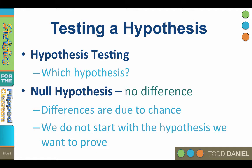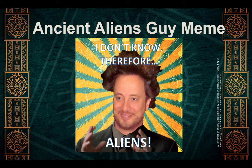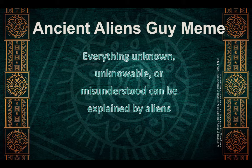Here is why we begin with the null hypothesis and not the hypothesis we would like to prove. It's Ancient Aliens Guy from the History Channel — an internet meme about a guy on a television show about aliens. No matter what the topic is, his explanation is always aliens. He can find evidence for aliens wherever he looks. The problem with his approach is that he begins with the alternative hypothesis, not the null hypothesis. He begins with the explanation that everything unknown, unknowable, or misunderstood can be explained by aliens, and steps into gaps in knowledge with his explanation: aliens did it.